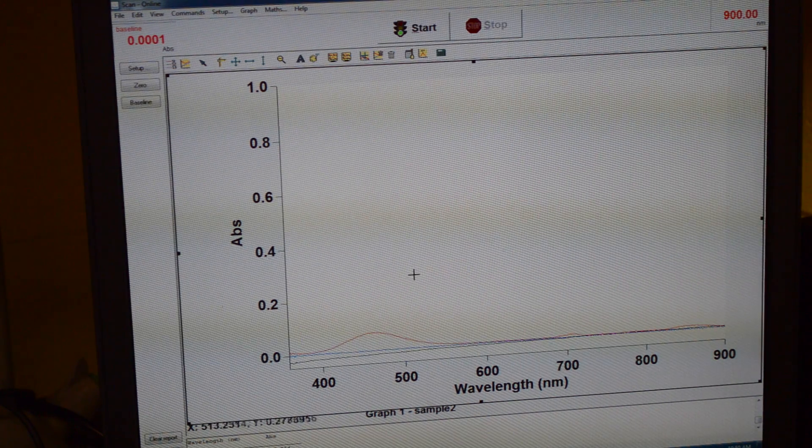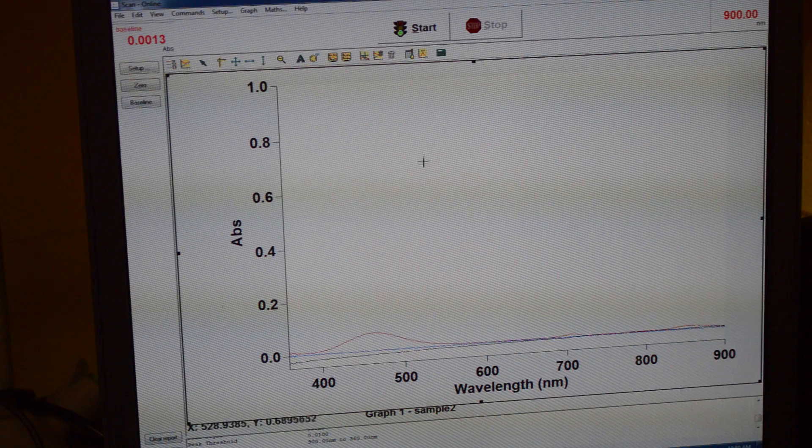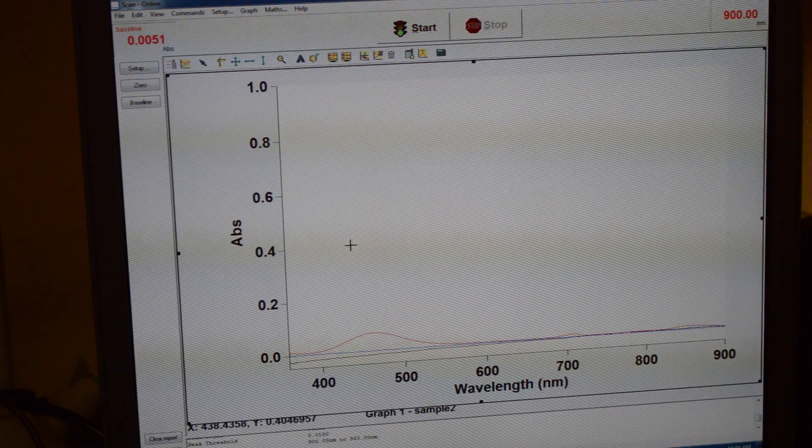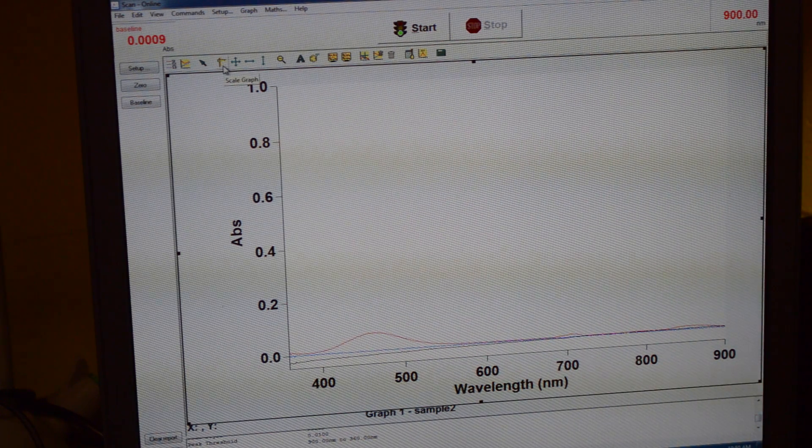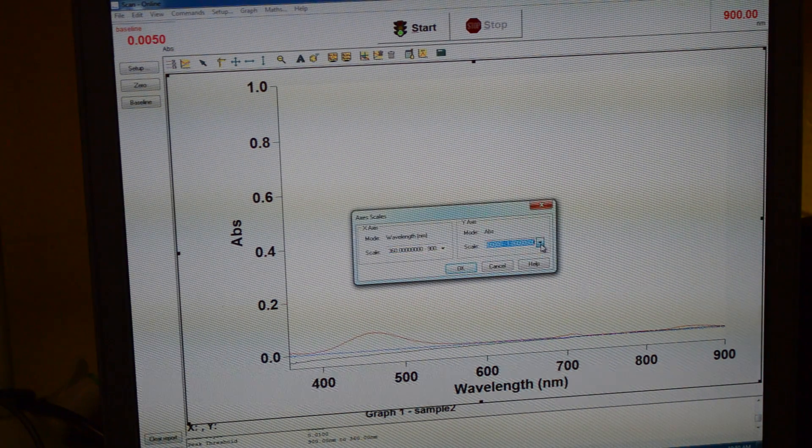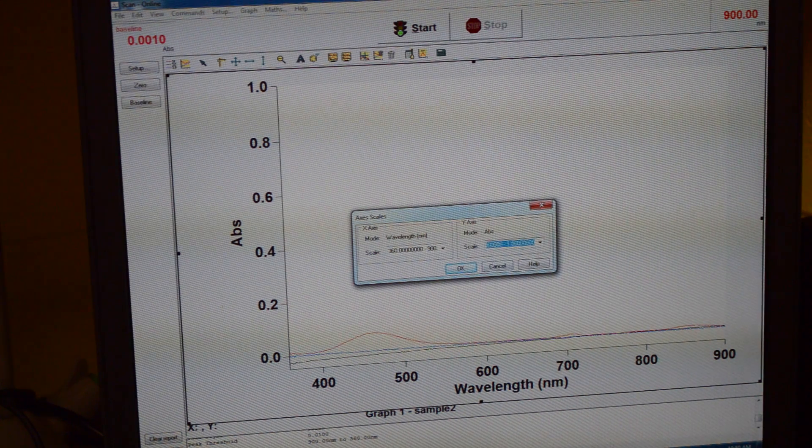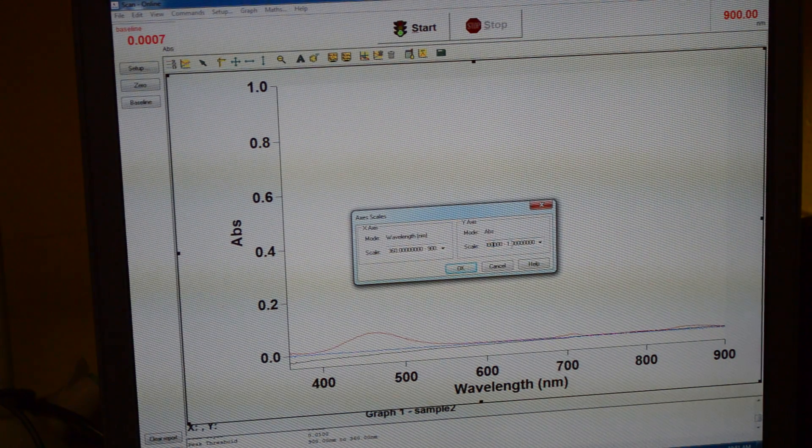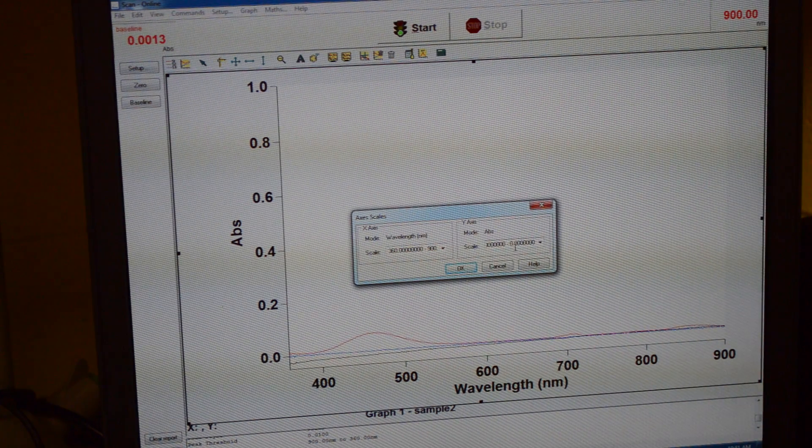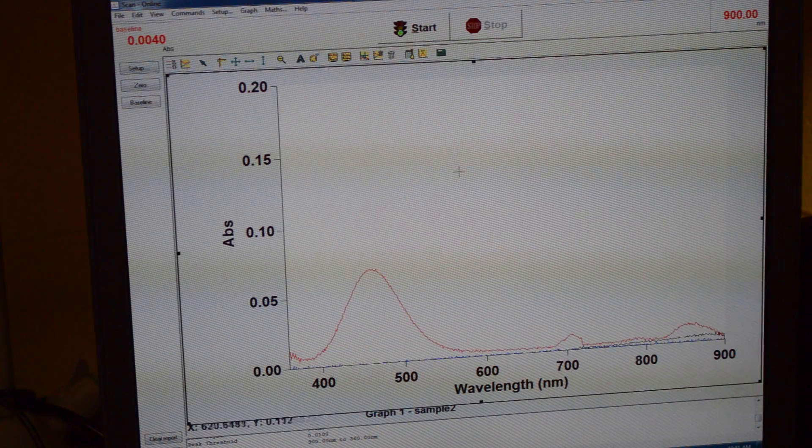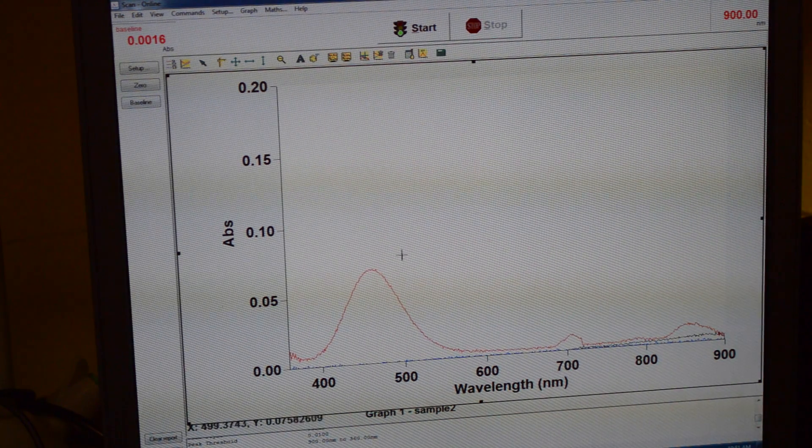Here we are going to modify the graph to pull out any results that we find important. To make the scale proper so you can see a nice curve in the graph, you are going to press the scale graph button up top here. You can set the scale depending on which part of the graph you would like to see. We can make our scale from 0 on the y axis to 0.2. As you can see, this made the graph bigger so we can see the results we want.